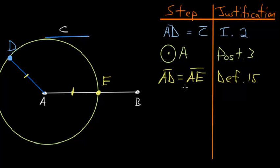But we already know that line AD equals line C. So it must also be true due to Common Notion 1 that says things which are equal to the same thing are equal to one another, that line AE must equal line C. So again, that is Common Notion number 1.